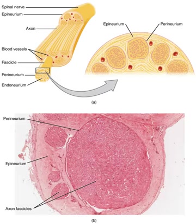An afferent nerve fiber conducts sensory information from a sensory neuron to the central nervous system, where the information is then processed. Bundles of fibers or axons in the peripheral nervous system are called nerves, and bundles of afferent fibers are known as sensory nerves. An efferent nerve fiber conducts signals from a motor neuron in the central nervous system to muscles. Bundles of these fibers are known as efferent nerves.